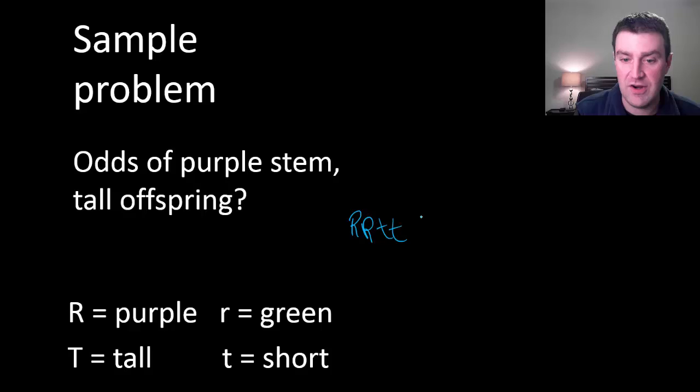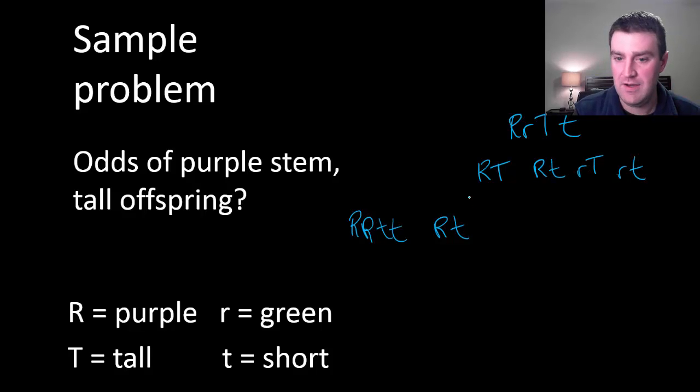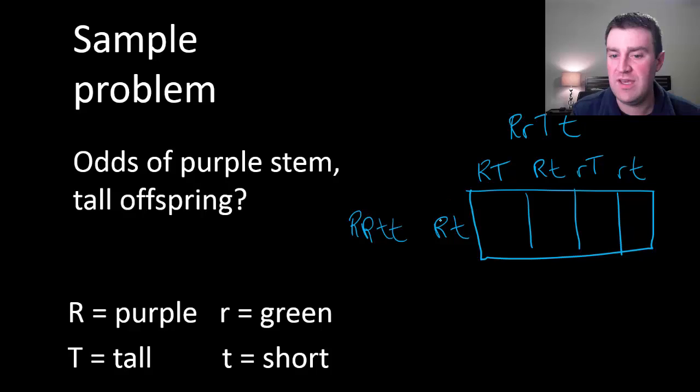So we're going to need to make a one by four Punnett square here. So what if this is my parent here who can only make this one gamete and then let's put my doubly heterozygous parent up here and all of the different gametes that they could make. And let's make our one by four diagram and then we can combine our gametes. Generally I like to keep my R's together and my T's together just like I did in my parents. It doesn't really matter how you write this as long as you look at it correctly.